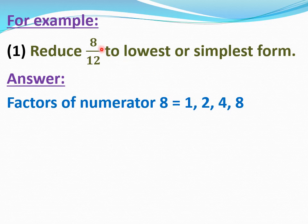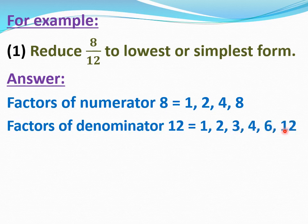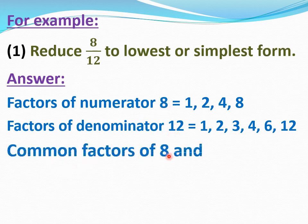First you have to calculate the factors of the numerator and denominator. Factors of numerator 8 equal 1, 2, 4, 8. And factors of denominator 12 equal 1, 2, 3, 4, 6, 12. Now find the common factors of 8 and 12. Common factors of 8 and 12 equal 1, 2, and 4.